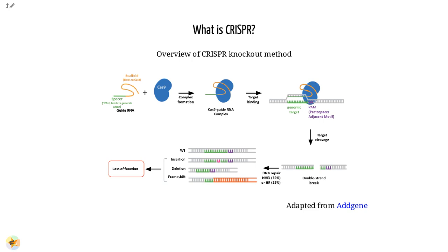It consists of two components: a guide RNA and a nonspecific CRISPR-associated endonuclease called Cas9. The guide RNA is a short synthetic RNA composed of a scaffold sequence necessary for Cas9 binding and a 20-nucleotide spacer sequence that binds to the genomic target. Cas9 induces a double-stranded break within the target DNA.